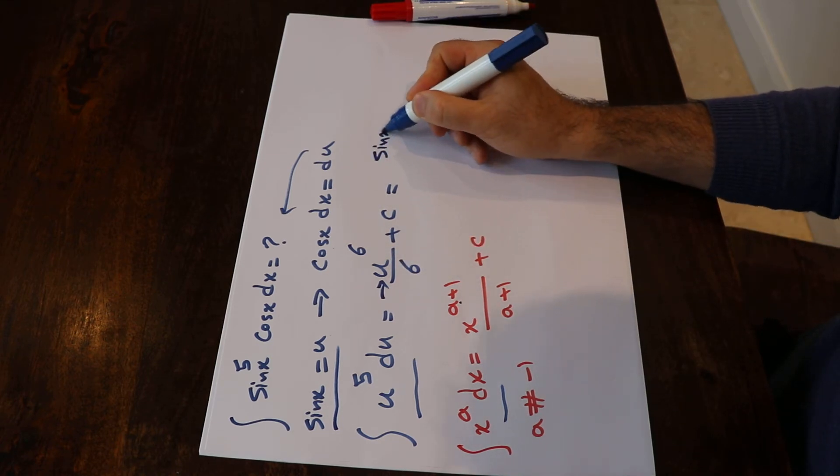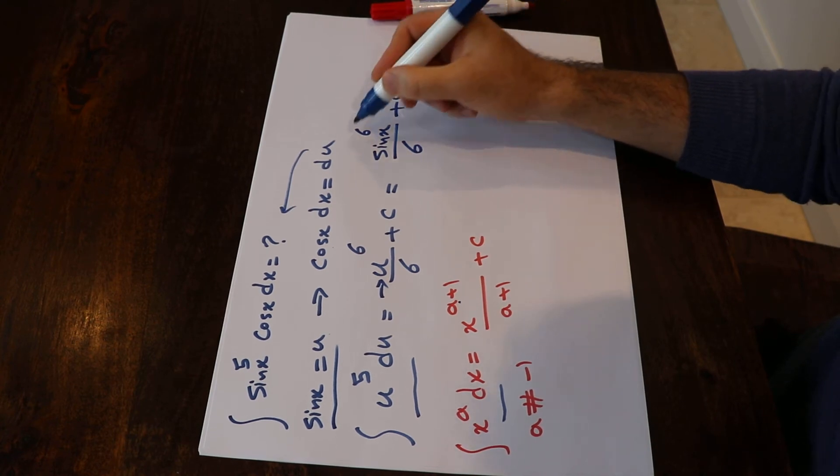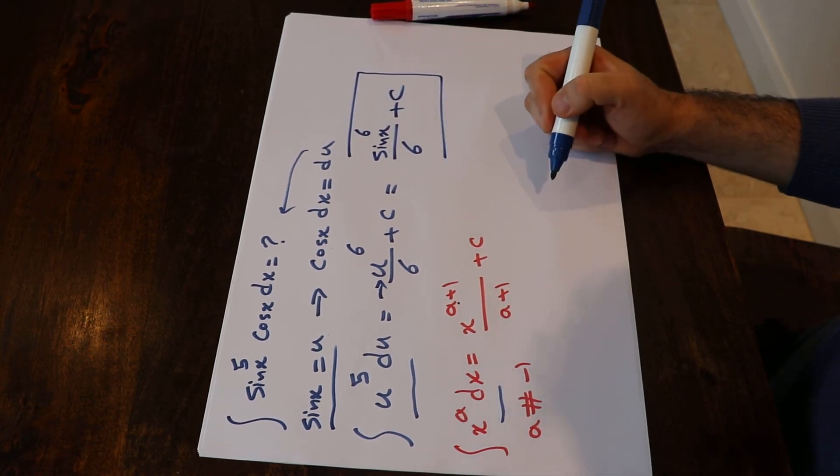So instead of u I put sine x to the power of 6 divided by 6 plus c, and that is the solution to your integral.